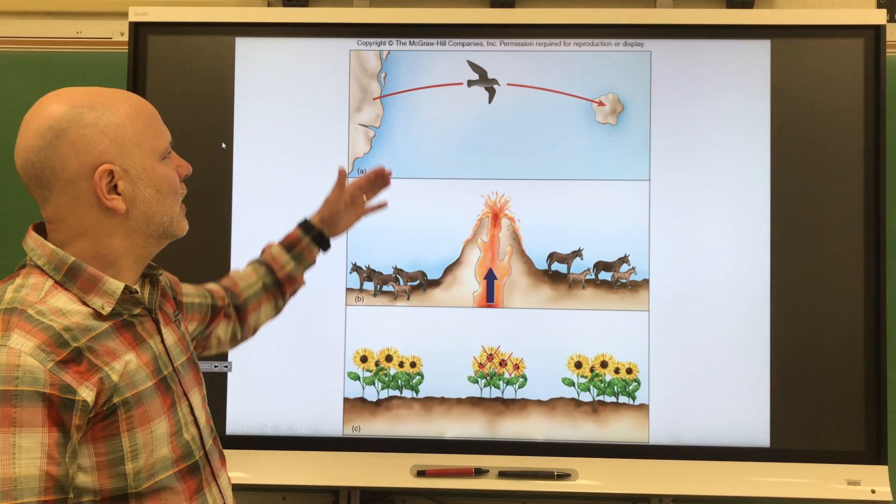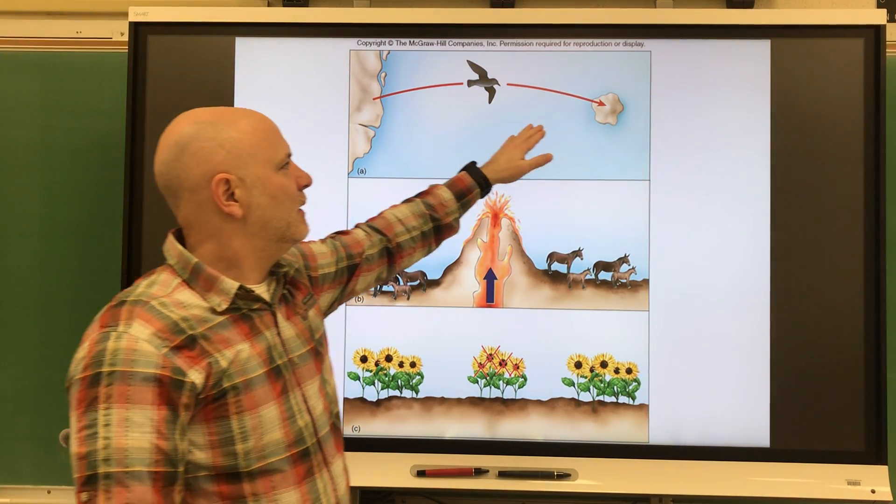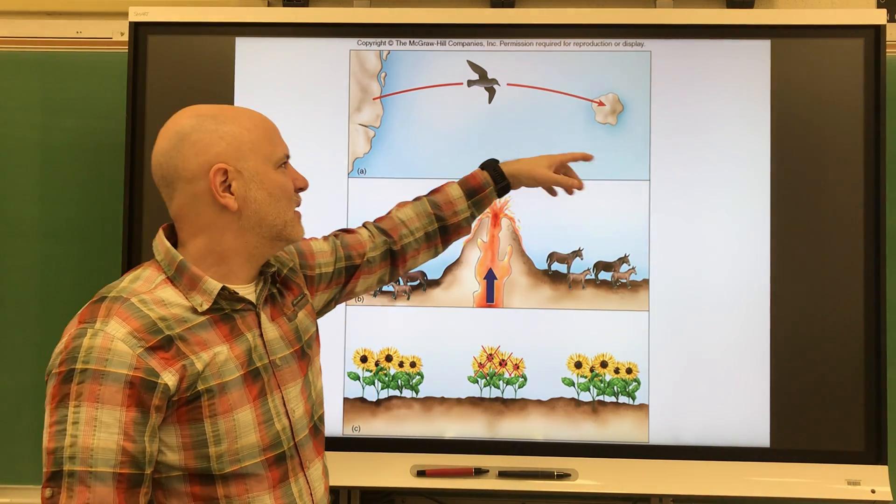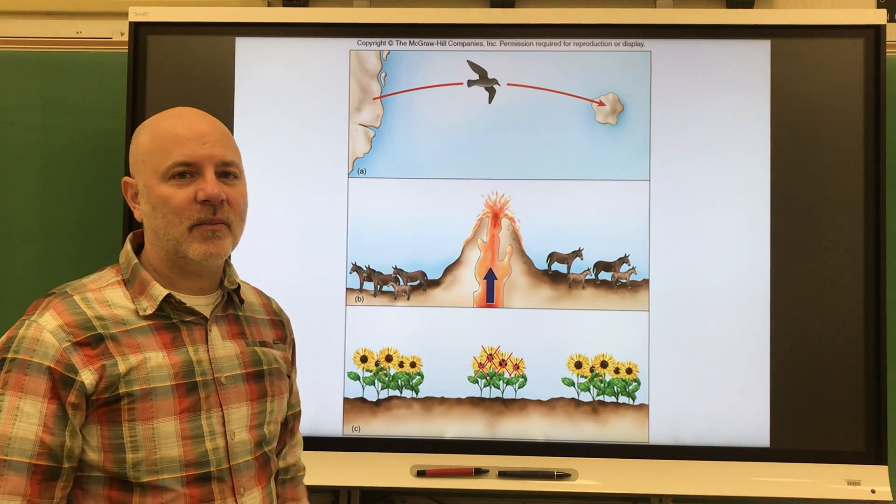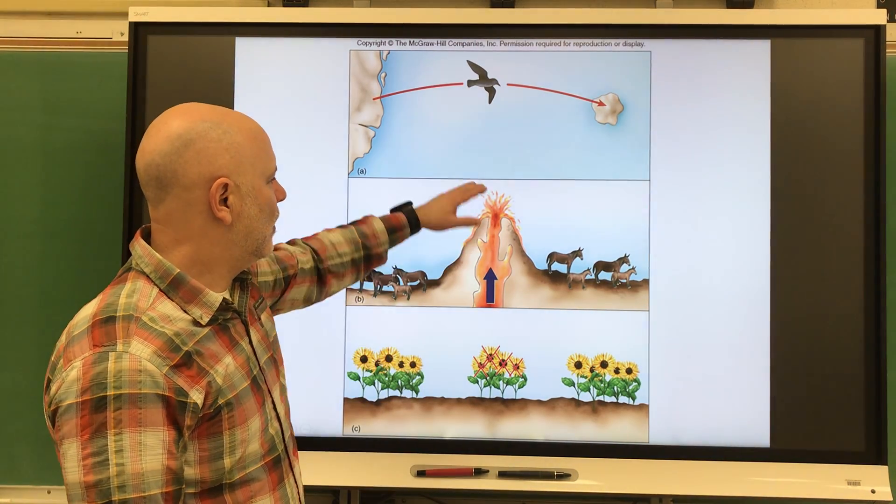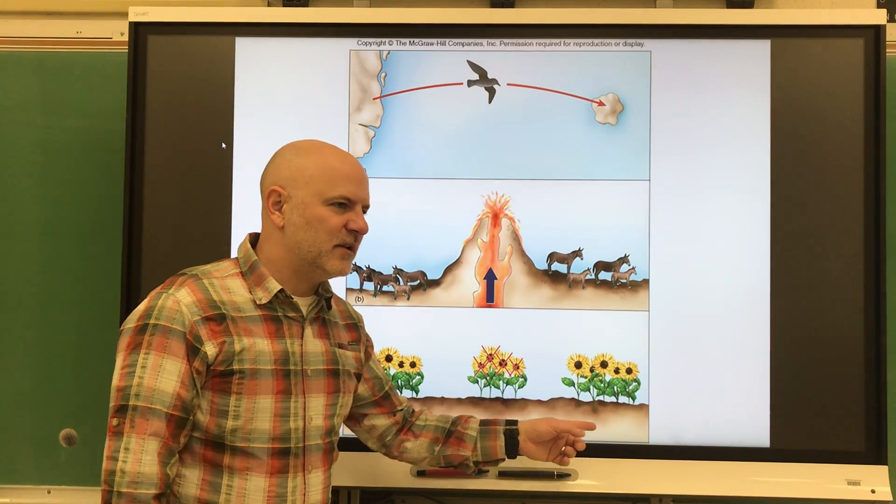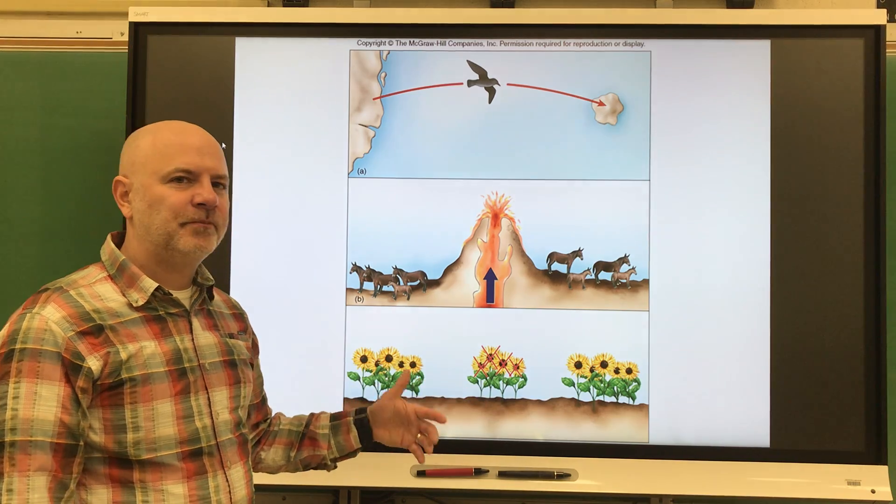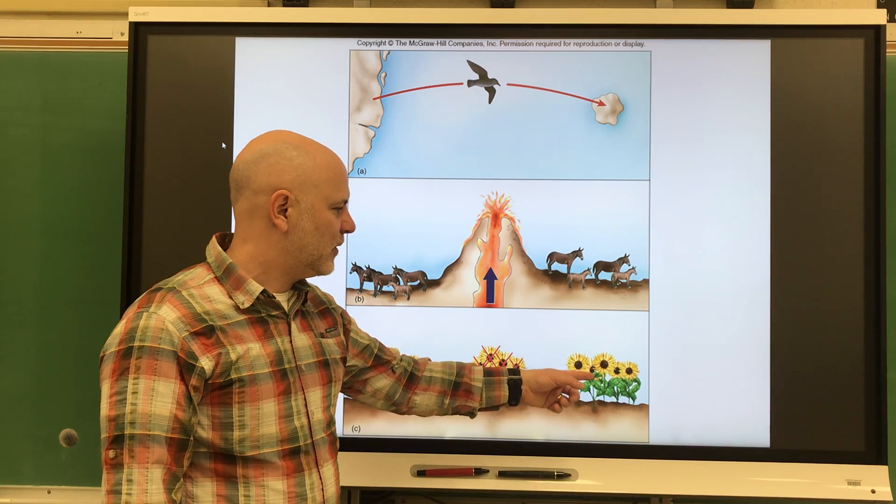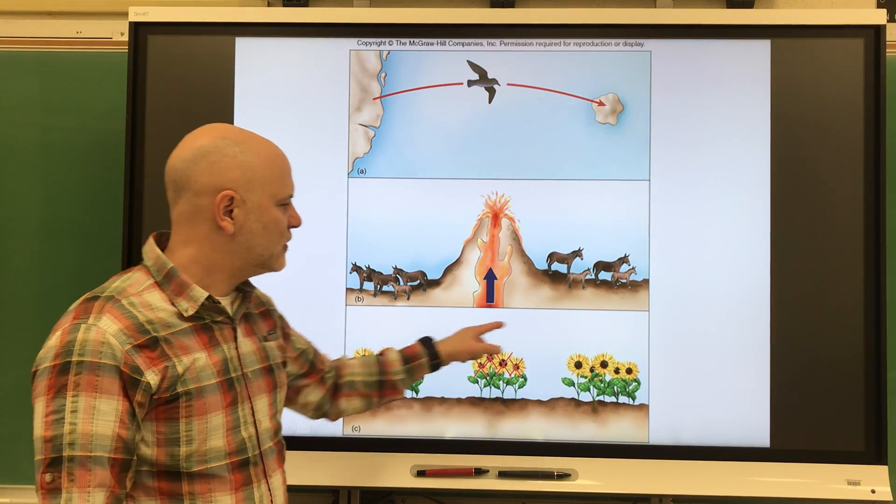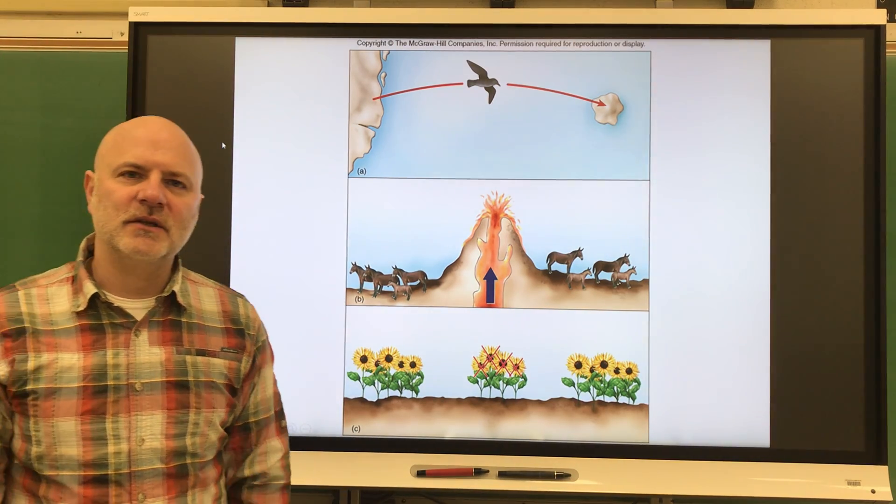There's other ways that this can occur. Say some birds get flown off course and then they land on an island, or insects. They're going to evolve for that island, which will be different from the environment on that mainland. Or they're getting separated by a mountain range. One way that this can occur is that an intermediate population dies out, so these two populations are now too far apart to reproduce with each other anymore.